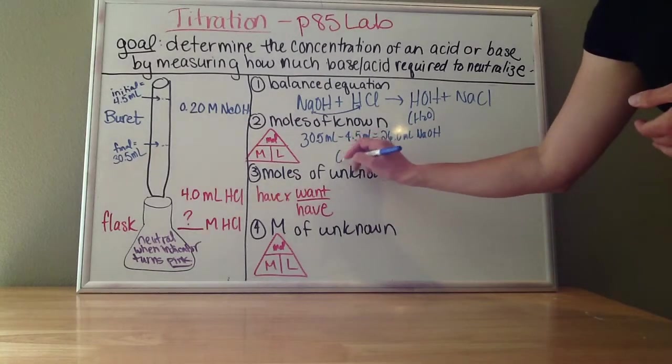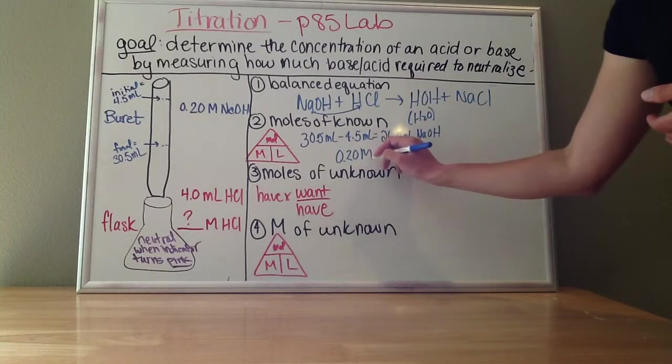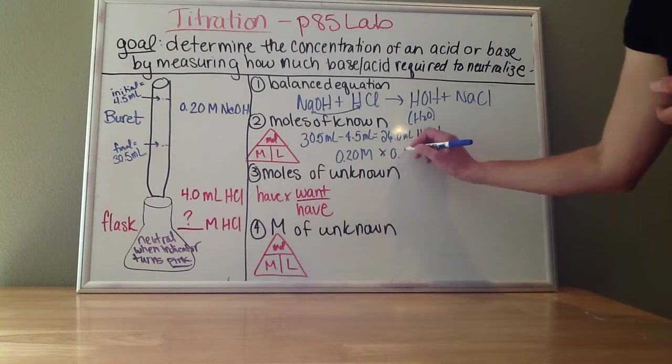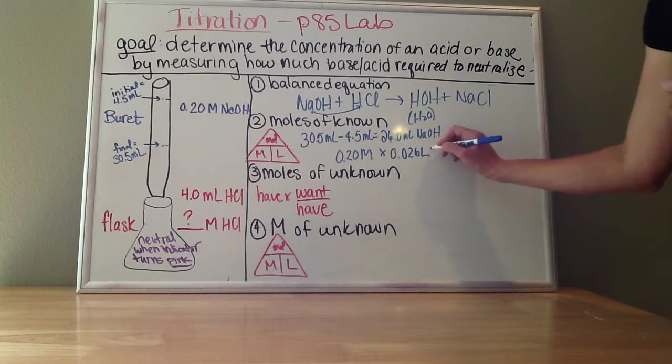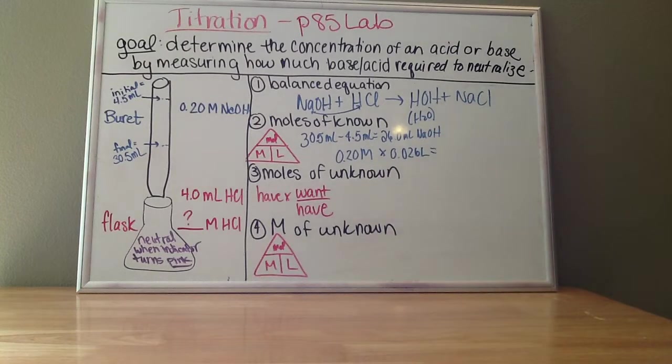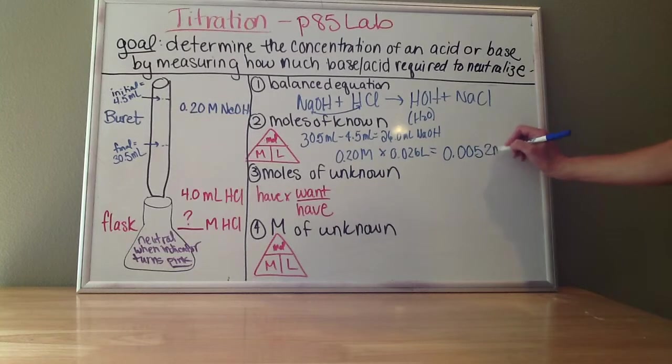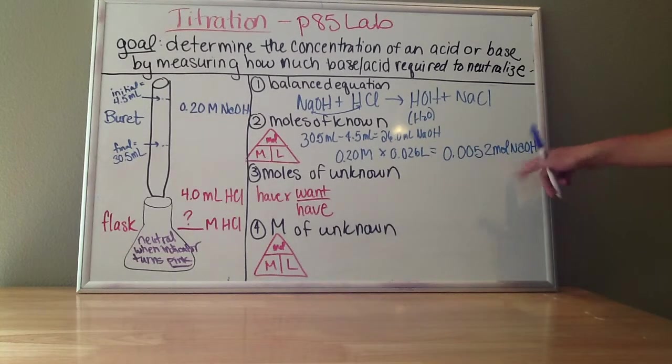I am going to take my molarity, 0.20 molar, times my liters, which is 0.026 liters. So don't forget to convert milliliters into liters by dividing by a thousand. And when I multiply those together, I will get 0.0052 moles of NaOH. So that's how much base it took to neutralize this acid down there.